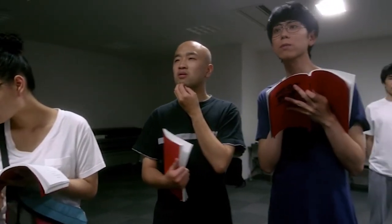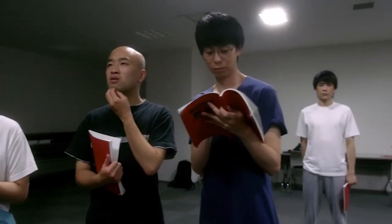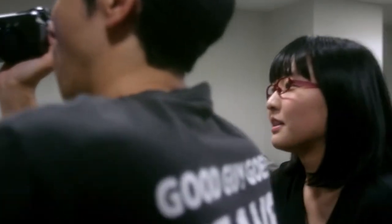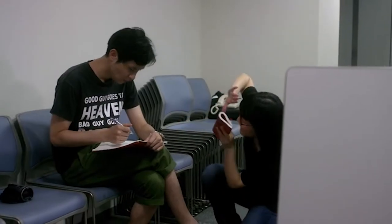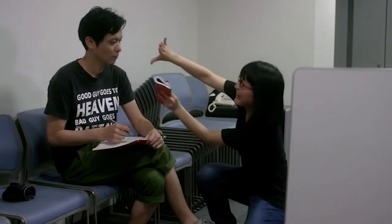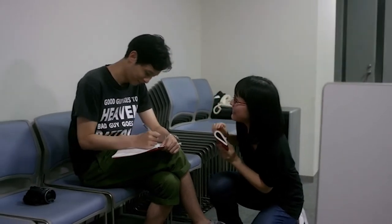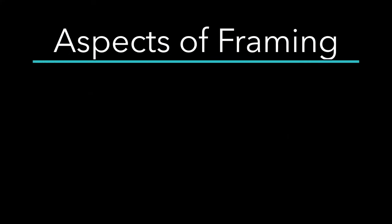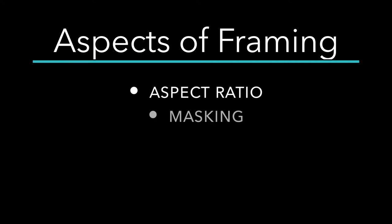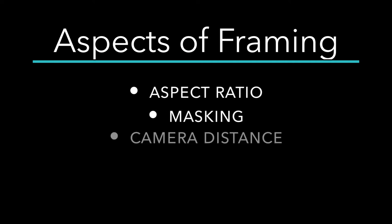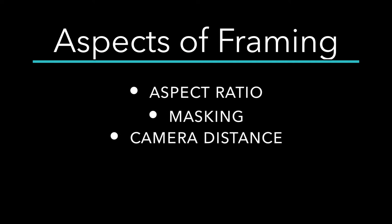Let's consider the biggest category first: framing. Framing refers to the camera frame itself, its shape, its position in relation to the mise-en-scene, and where it occupies space on set. This translates to aspect ratio, masking, camera distance, camera angles, and camera height.